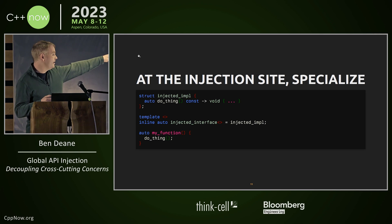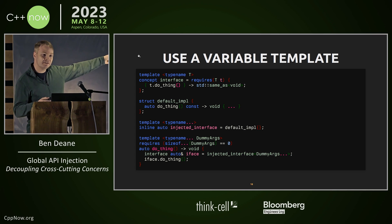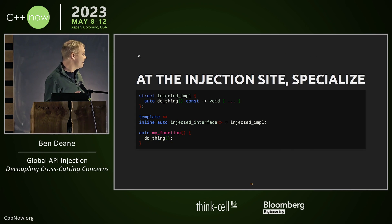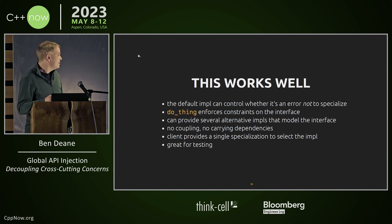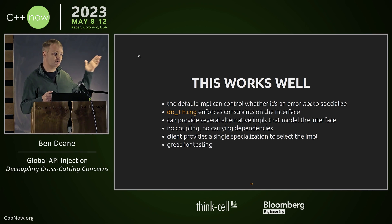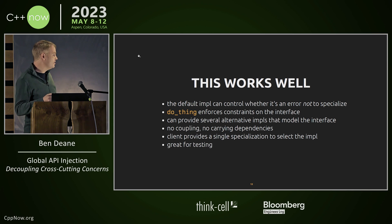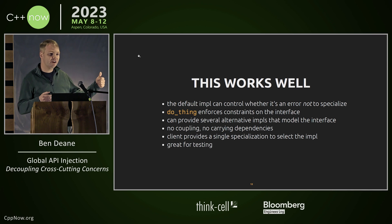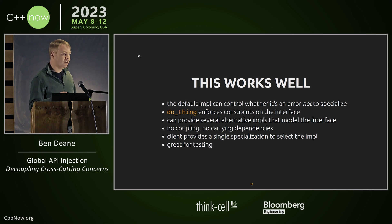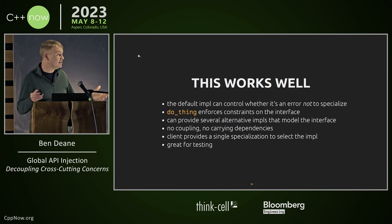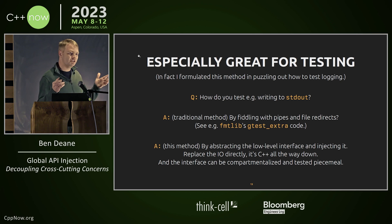But other than that, this pattern works great. The client gets to provide the interface in a one-liner, and I can provide a default interface if the client doesn't need to inject it. The default implementation can control whether it's an error not to specialize. You can have several functions there and put static asserts in them. You can enforce the interface with constraints. There's no coupling, you don't need to pass anything in, no carrying dependencies down, and clients are just a one-liner to specialize. This is fantastic for testing.